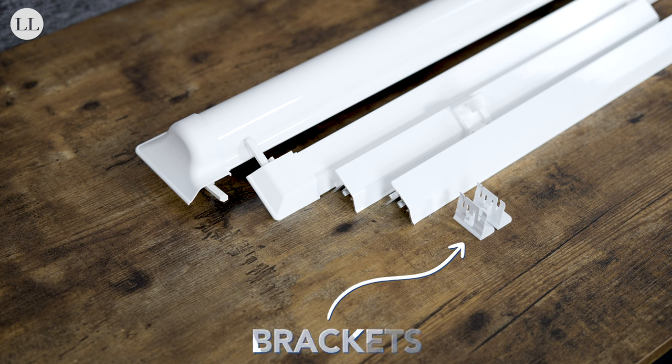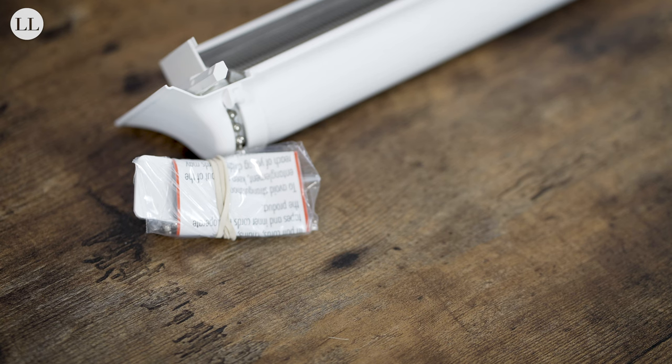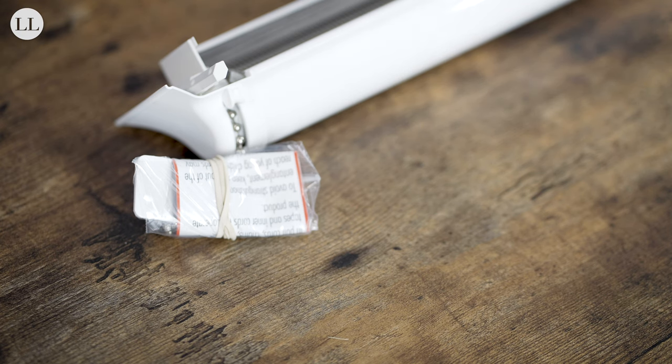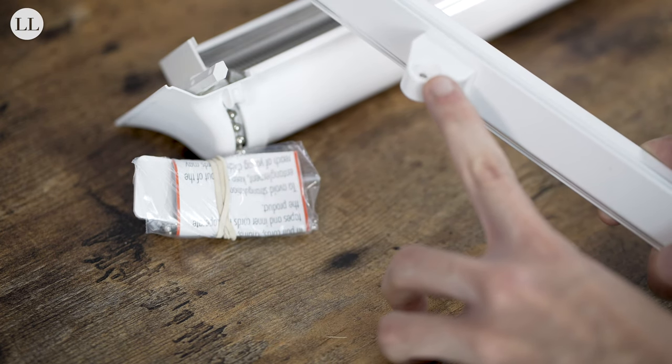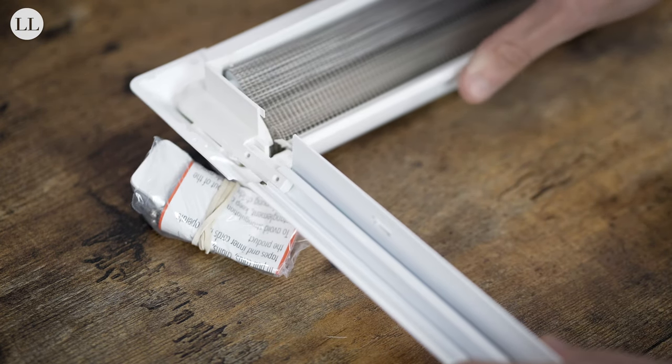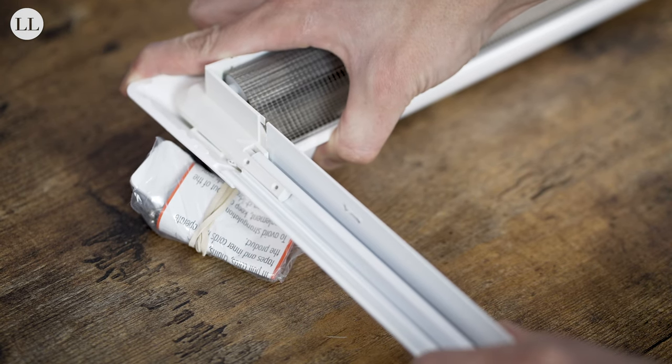To assemble the Perfect Fit Blind, flip the blind face down and start with the control end. Attach the side channel with the cord tidy. Line up the grooves of the side channel with the control end set and clip in.